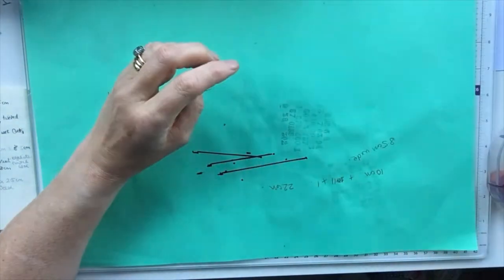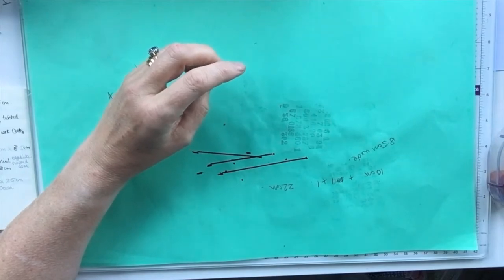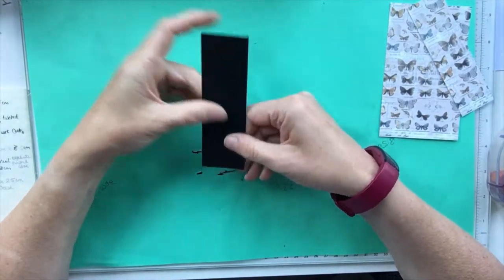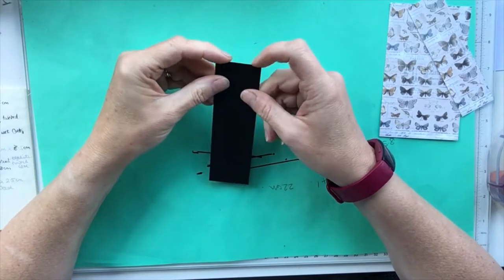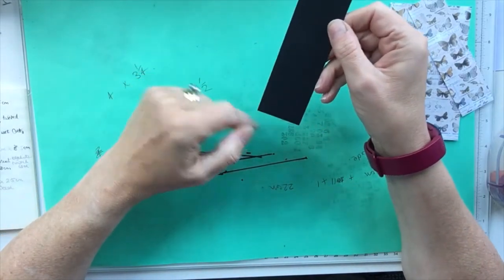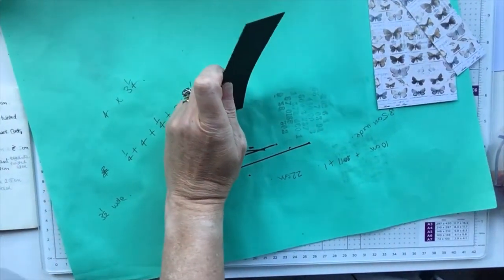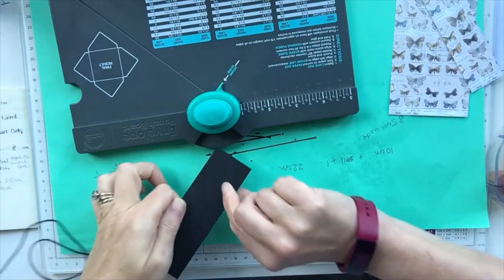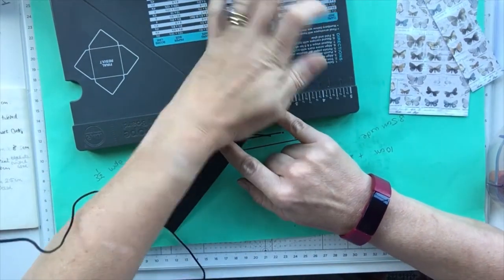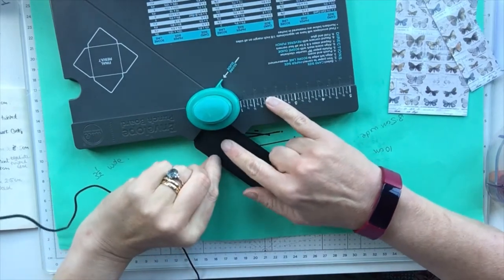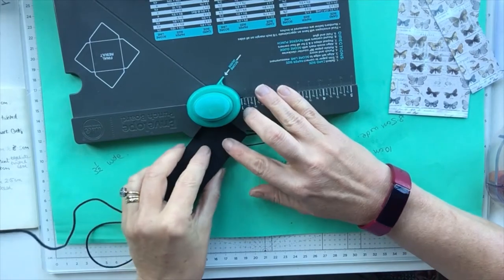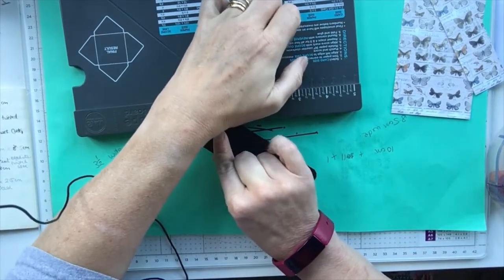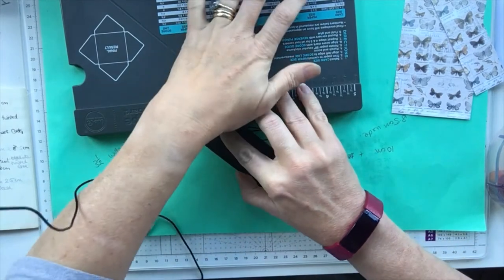So talking of scraps, I literally had a piece of black card and some patterned paper. For the base of your little wallet you need a piece of card that is one and a half inches by four and three quarter inches, and you are going to round all of the corners. I'm just going to bring in my envelope punch board which has got a corner rounder.